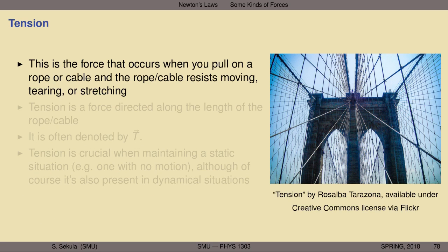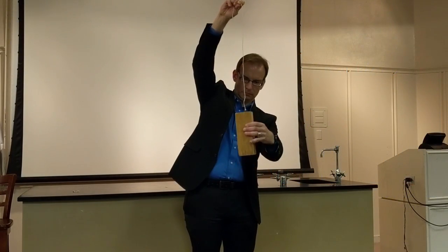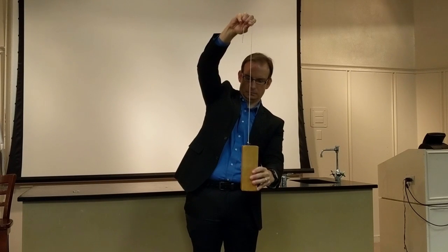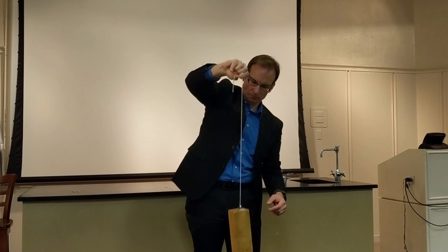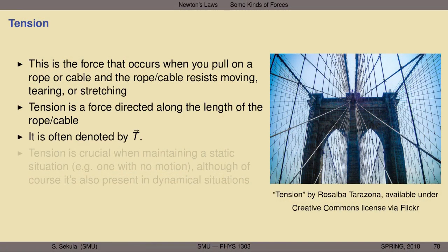Another force important to all the structures we build — especially bridges — is the force of tension. This is the force that occurs when you pull on a rope, cable, or string and it resists moving. If it's affixed to a wall on one end and you pull until it's taut, it stops — it resists tearing. Tension is a resistance to tearing or stretching, directed along the length of the object being yanked on. It's often denoted by a capital T with a vector hat over it.